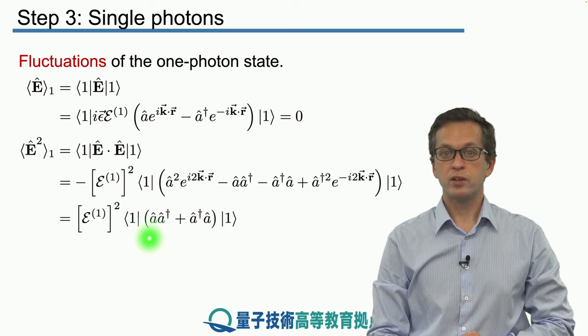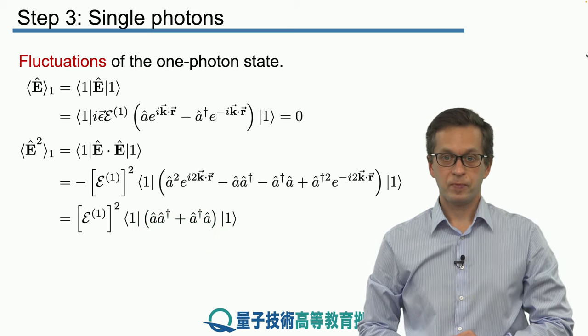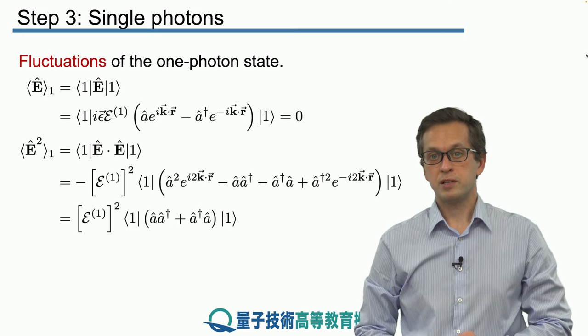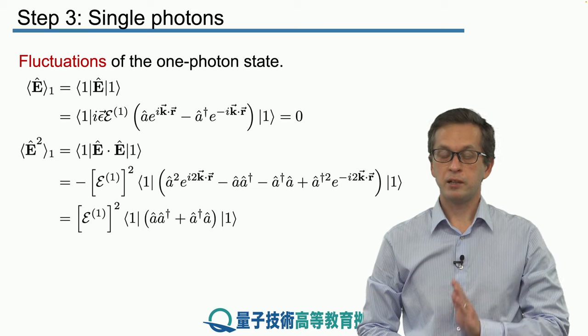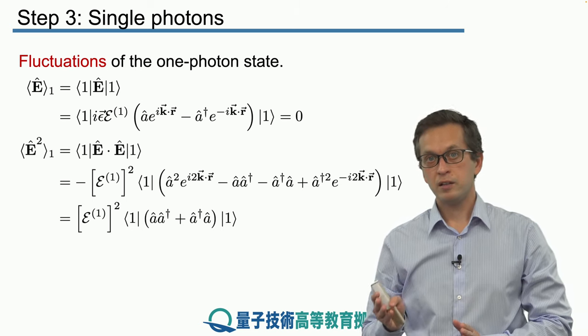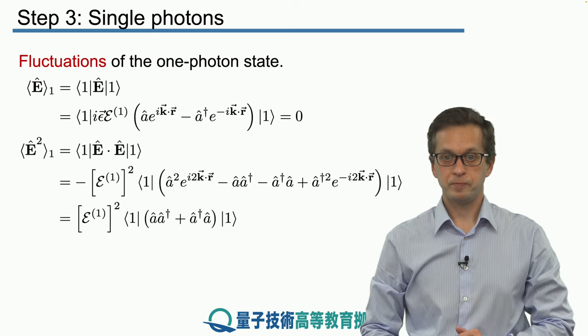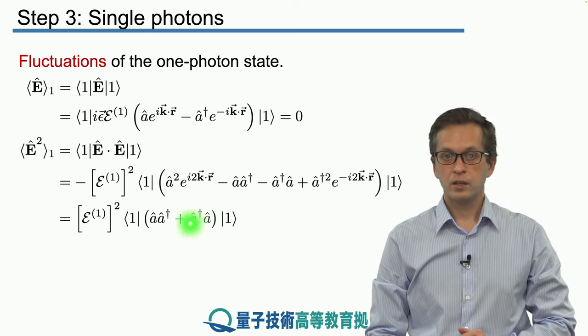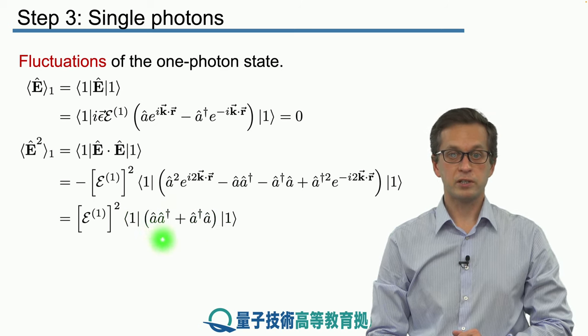We've got the average of a times a dagger plus a dagger a. Again we follow the same procedure and we write all of the operators in normal ordering, meaning the daggers appear on the left and the annihilation operators appear on the right. This term is already normally ordered, this one is not. So we apply the commutation relations to this term.